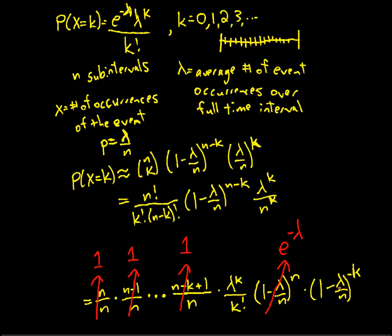Now what happens over here? As n gets very large, what's inside the parentheses becomes very close to 1. And if I raise 1 to a power, it pretty much stays the same. So this is still going to stay 1. And what we get is lambda to the k, e to the minus lambda over k factorial.